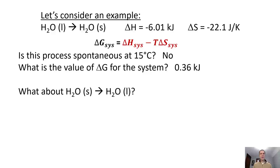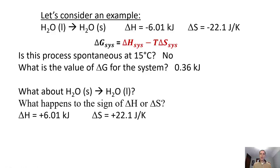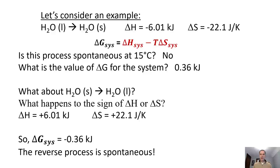But then we might think: what about the reverse process — solid water going to liquid water? When we flip that equation, the sign of delta H and delta S both change, so instead of being negative we're going to have positive values for each. The math stays the same, and so the delta G of that system would be minus 0.36 kilojoules, meaning the reverse process is actually spontaneous. That's probably not too much of a surprise — if you have ice and you set it out at 15 degrees, it would melt.